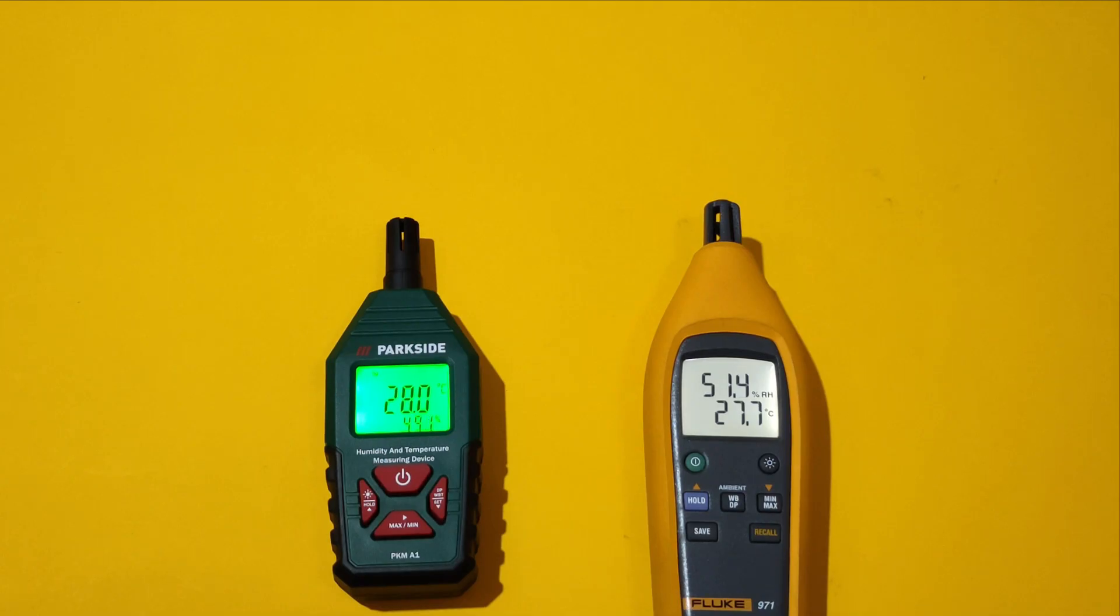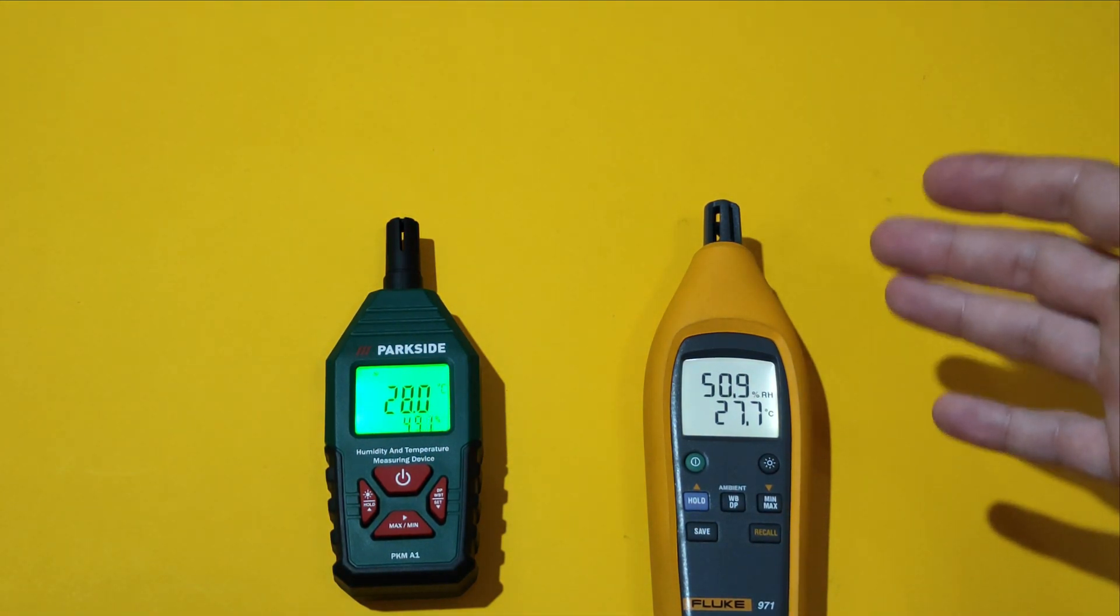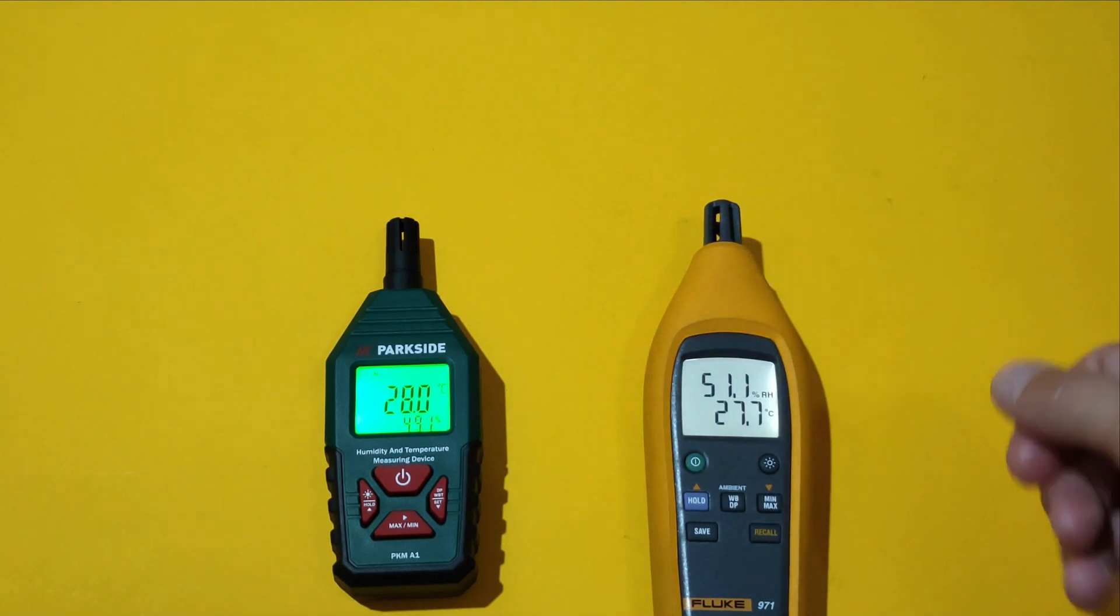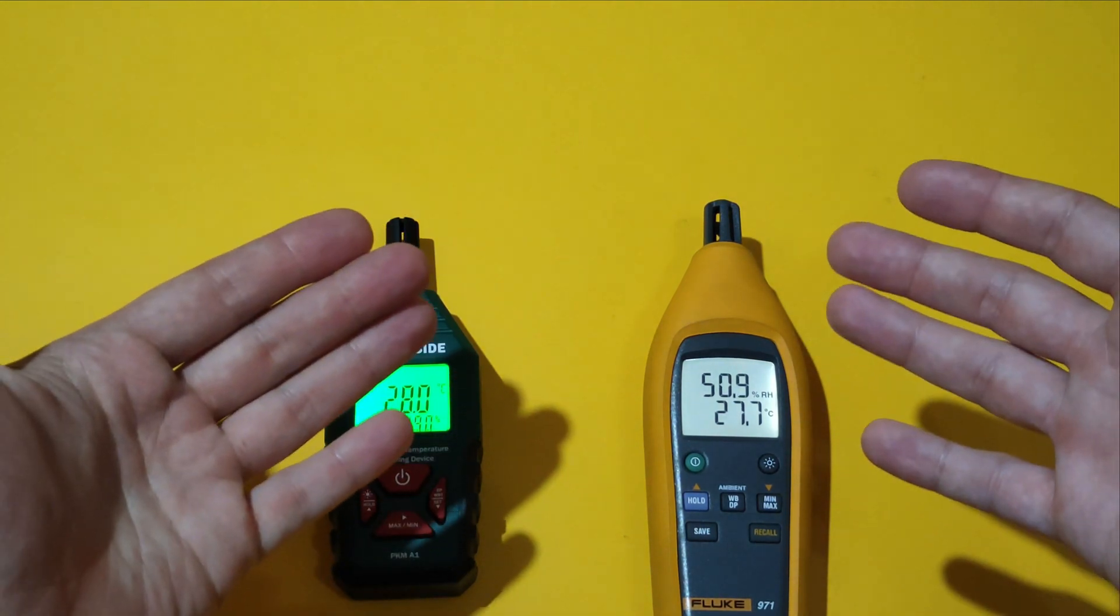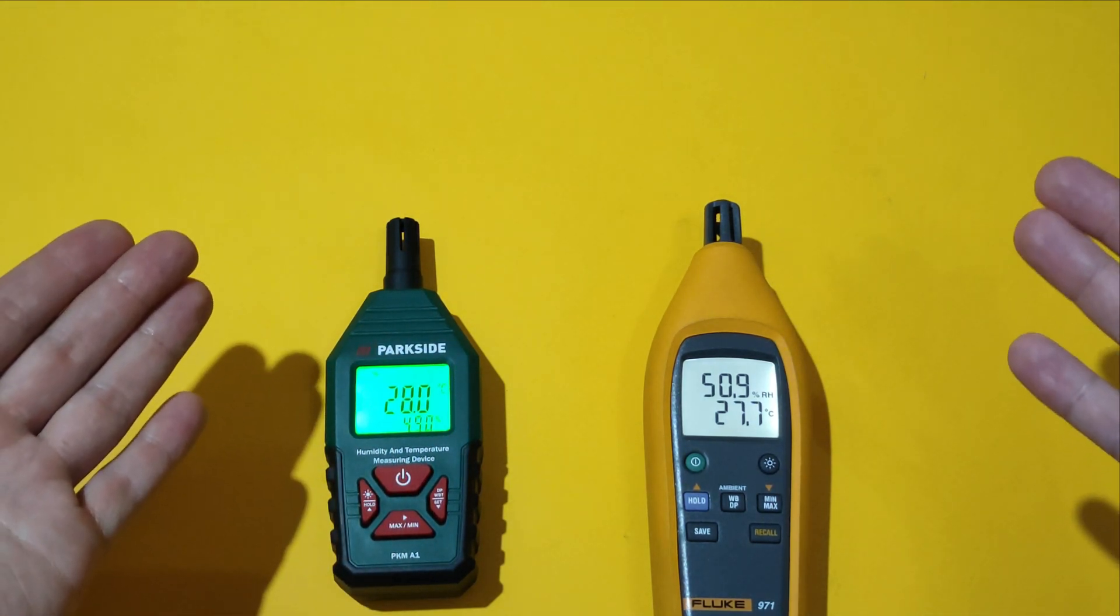Let's continue with the biggest difference between those two. The sensor head on the Fluke is way more responsive to temperature changes than the sensor head on the Parkside. And it's normal. The Fluke is way more expensive. The temperature on my both hands should be pretty equal. So, let me demonstrate you something.